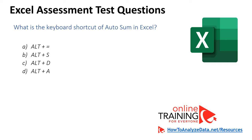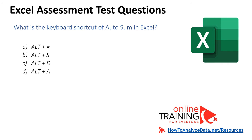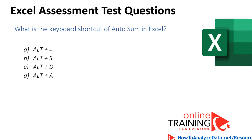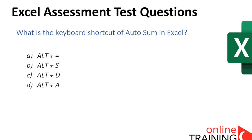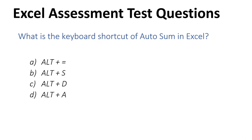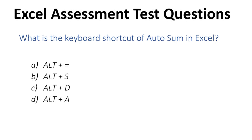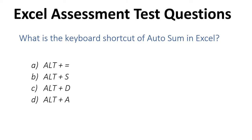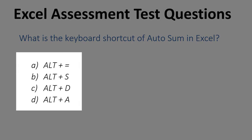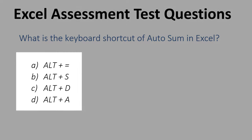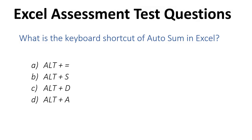Which keyboard shortcut would you use to complete the AutoSum function in Microsoft Excel? There are four different options offered on screen: Alt plus equal sign, Alt plus S, Alt plus D, and Alt plus A. Which one would you choose?